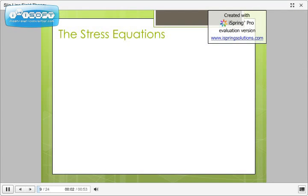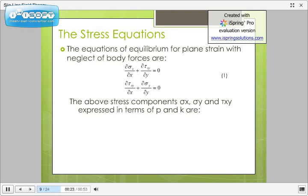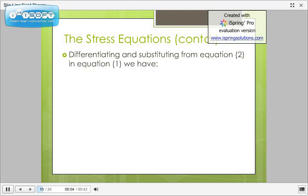Now, we shall derive stress equation for determining magnitude of P and K. The equations of equilibrium for plane strain with neglect of body forces are d sigma x by dx plus d tau xy by dy equals zero and d tau xy by dx plus d sigma y by dy equals zero. These equations are basic equations. The above stress components sigma x, sigma y, tau xy expressed in terms of P and K are given in equation 2.